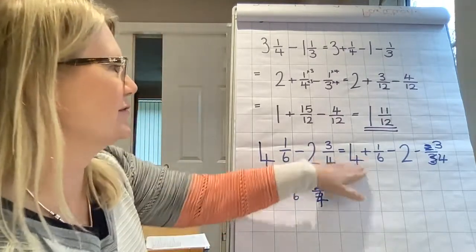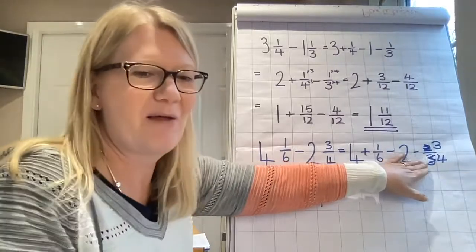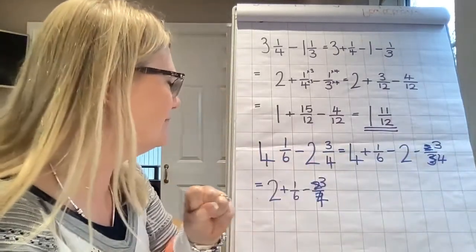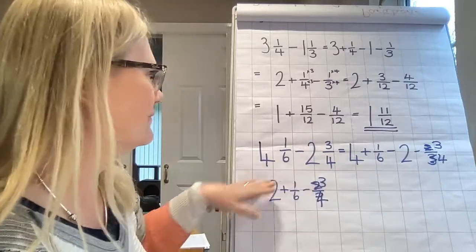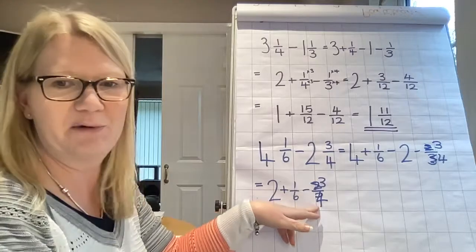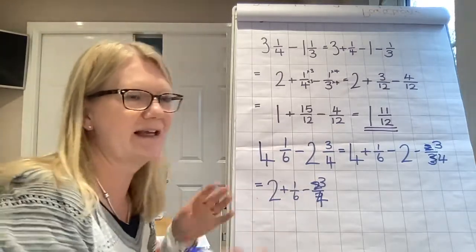Okay, four and a sixth minus two and three quarters. Four plus a sixth minus two, minus three quarters, because we're taking the two and three quarters away. Four minus two is two, plus one sixth, minus three quarters. Right, we're back on track. Sorry, everybody makes mistakes.